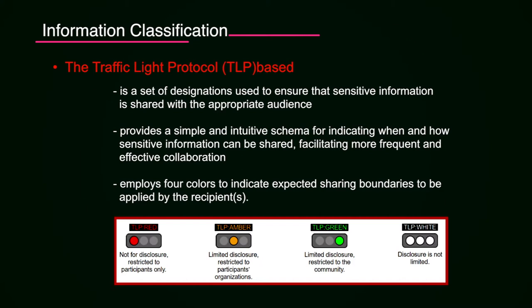TLP White means disclosure is not limited — the recipient can share this information over the public domain or the information is available for public consumption. TLP Green means information can only be shared within the community — that specific sector, CSIRT community, or forum. TLP Amber means limited disclosure, restricted to participants or organization only — you are only allowed to share that information within your organization. TLP Red means not for disclosure, restricted to participants only — it's only for you and should not be shared with any other person.